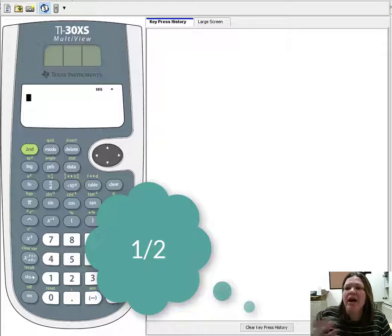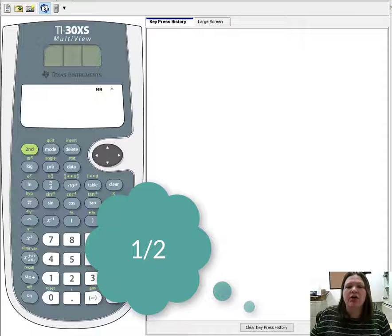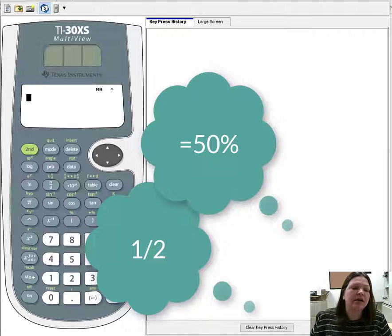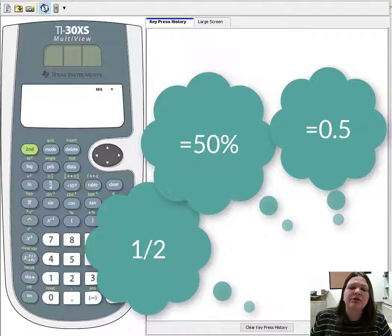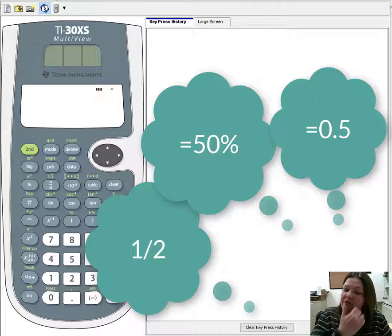One half - you can just write 1/2, that's a fraction. You could write 50%, that's the same idea but as a percent, or you could write 0.5, again the same idea but as a decimal. So there's three different forms of the same number.